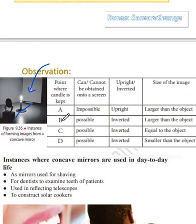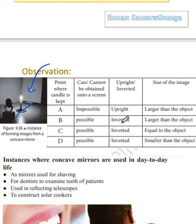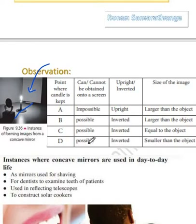You must understand that the size of the image is quite considerably larger than that of the object. When you move it to locations B, C, and D — all three positions a bit far away from the mirror — you will be able to observe that the image is inverted. In position B, C, D, they can be screened. In position A, you can't get the image onto a screen, but in B, C, D it is quite possible.